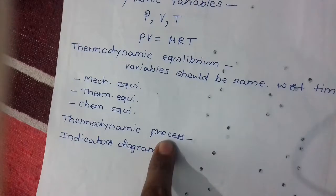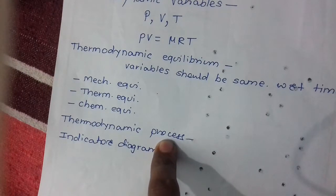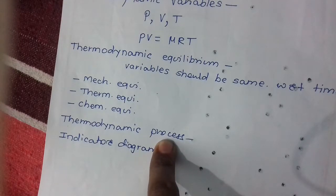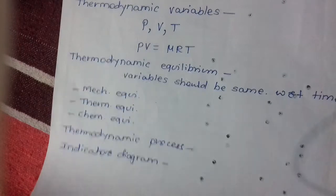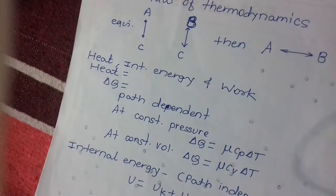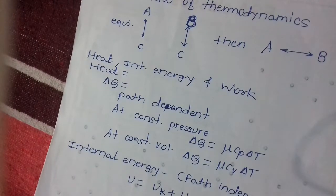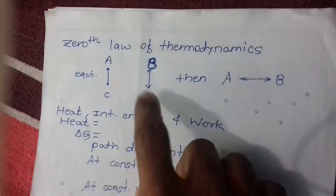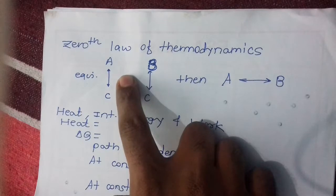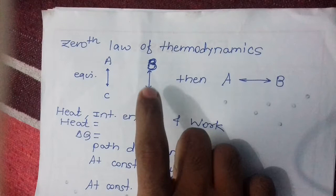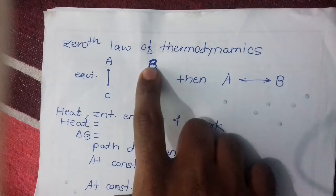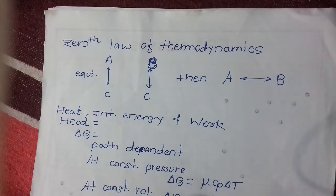Thermodynamic processes include adiabatic, isothermal, and isochoric processes. The indicator diagram is a pressure versus volume diagram. The 0th law of thermodynamics states: if system A is in thermal equilibrium with C, and system B is also in thermal equilibrium with C, then A and B are both in thermal equilibrium with each other.